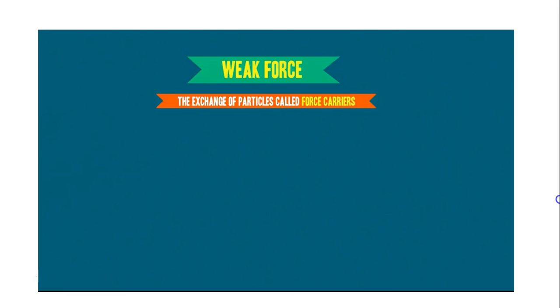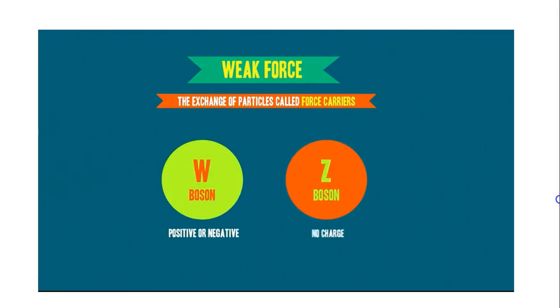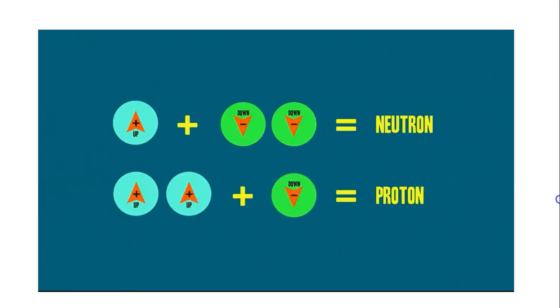Weak force has two force carriers, the W bosons, which can be either positively or negatively charged, or the Z bosons, which have no charge. Now, let's watch some weak interaction at work. How about we make a neutron change or decay into a proton? To do this, we're going to need a neutrino passing by. So remember, neutrons are one up quark and two down quarks, and protons are two up quarks and one down quark.